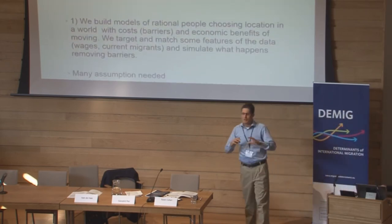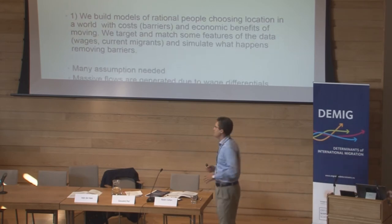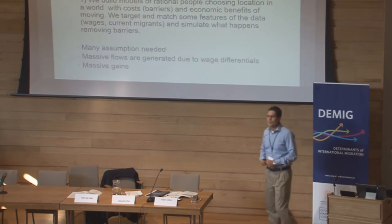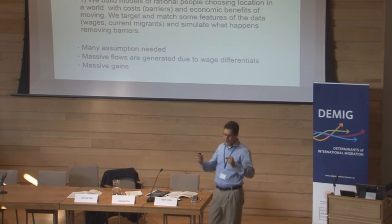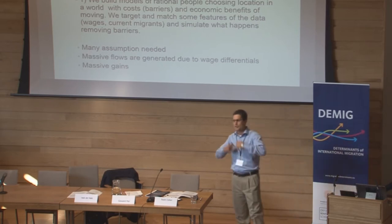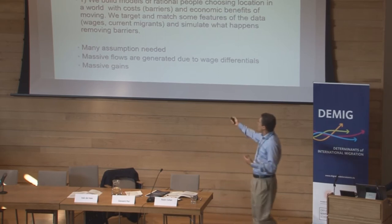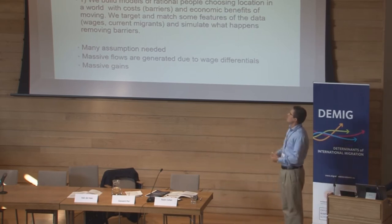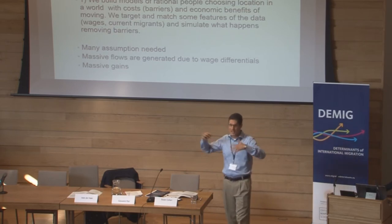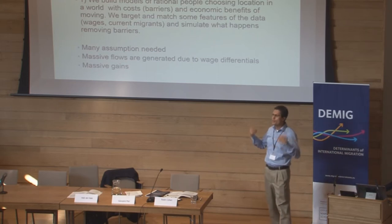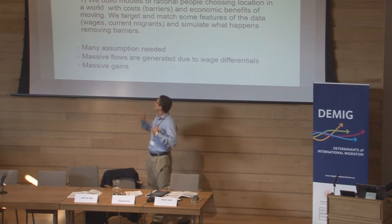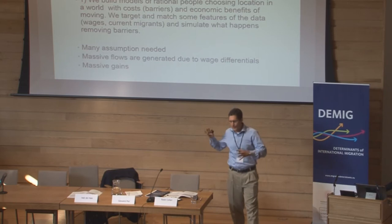The way I see economic research on this, there have been three ways we have tried to tackle this question. The first is building theoretical models in which rational individuals choose where to locate, with benefits of moving — increased wages — and costs, including legal barriers. We use these models to calibrate against wage and income differences across countries, then simulate what happens if barriers are removed. These models have a heavy amount of assumptions and many parametrizations, so I won't review them extensively.